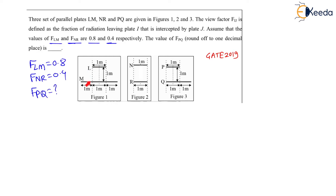The view factor of L with respect to M is given as 0.8, and the view factor of N with respect to R is given as 0.4. We need to find the view factor of P with respect to Q for figure 3. Let us do some modifications in figure 1. I am going to divide plate M into 3 equal parts of 1 meter each, calling them A, B, and C. Therefore, F_LM equals F_LA plus F_LB plus F_LC.